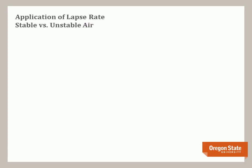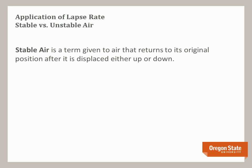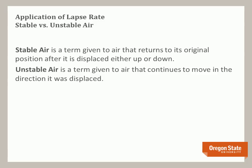So what does this process of air movement mean in terms of the stability of the air? Stable air is a term given to air that returns to its original position after it is displaced, either up or down. Unstable air is a term given to an air parcel that continues to move in the direction that it was displaced.